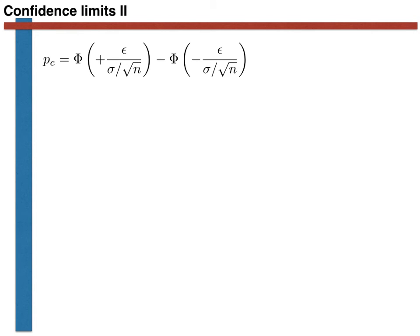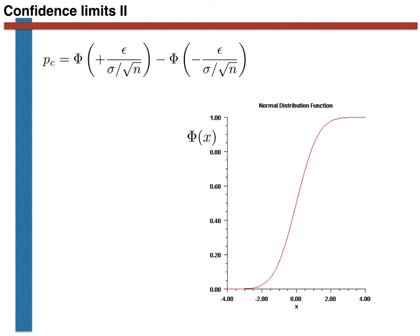The final result we have arrived at is shown here. Our confidence limit, P of C, is equal to the difference in the value of a cumulative probability distribution function for a normal random variable — specifically, the difference between the value of this function at epsilon over sigma divided by square root of n and the value at minus epsilon over sigma over square root of n. Since the cumulative probability distribution function for a normal Gaussian is an even function, the second term is simply one minus the first term, and we can simplify our confidence limit accordingly.